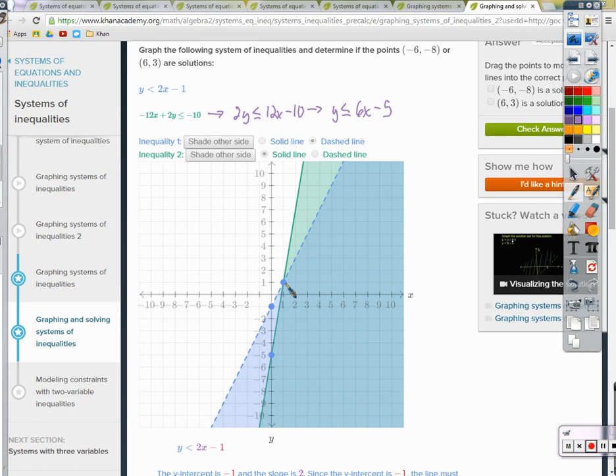Well, then they must have graphed it correctly and got it wrong because of this part. Any of those questions? Negative 6, negative 8 is a solution and 6, 3 is a solution. Let's see.